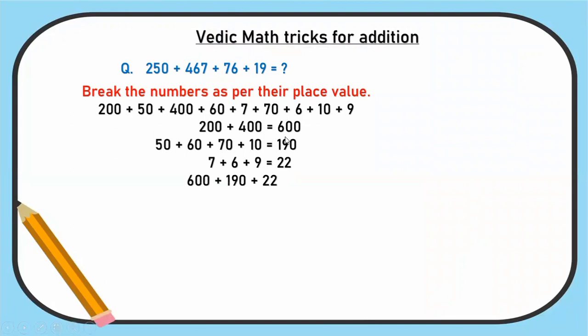Now 600 plus 190 plus 22. Repeat the process. That is 190 and 22 we can split again. That is 600 plus 100 plus 90. Then 22, 20 plus 2. That's 600 plus 100 is 700. 90 plus 20 is 110 plus 2.